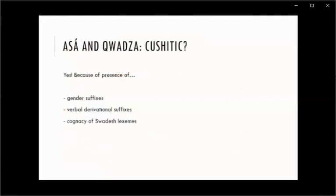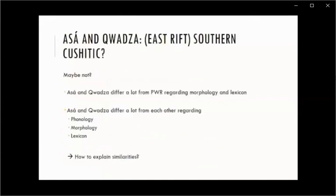This brings us to some preliminary conclusions. I do think Asa and Kwadza are Cushitic languages, because we see the presence of gender suffixes and verbal derivational suffixes, and there are enough cognates with the other languages. But maybe we cannot state with confidence that Asa and Kwadza are East Rift Southern Cushitic, because they differ a lot from Proto-West Rift regarding morphology and lexicon, and they also differ a lot from each other regarding phonology, morphology, and lexicon. But if they are not East Rift Southern Cushitic, how can some of the similarities be explained? That is one of the questions I need to answer.